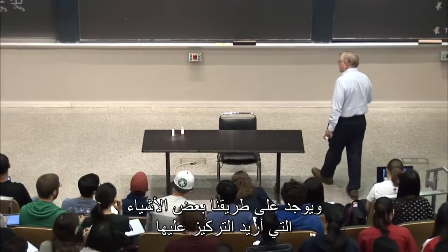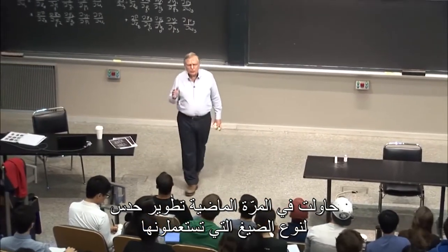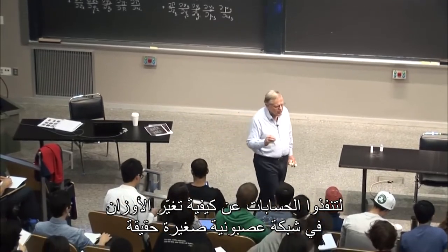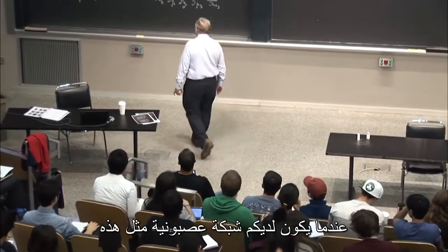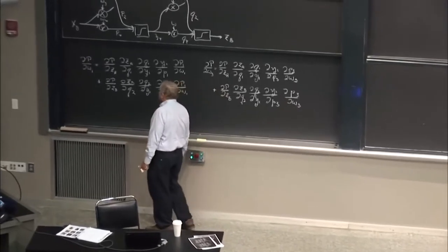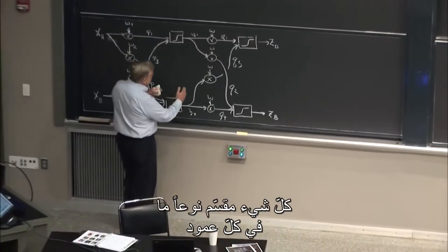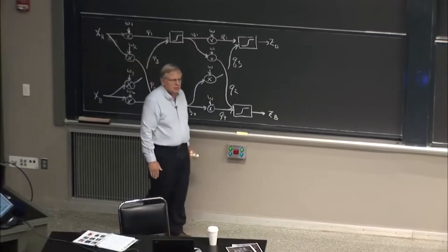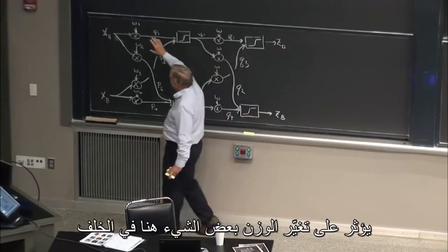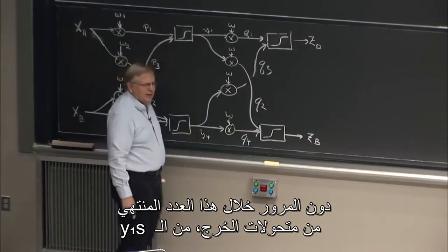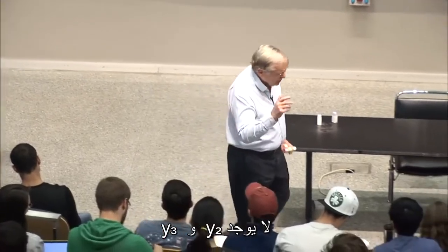But along the way are a couple of things I wanted to underscore from our previous discussion. Last time, I tried to develop some intuition for the kinds of formulas that you use to actually do the calculations in a small neural net about how the weights are going to change. And the main thing I tried to emphasize is that when you have a neural net like this one, everything is sort of divided in each column. You can't have the performance based on this output affect some weight change back here without going through this finite number of output variables, the y1s.